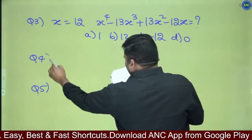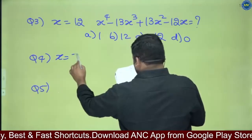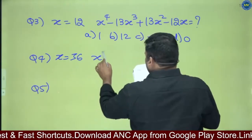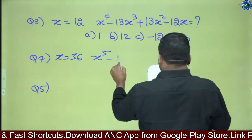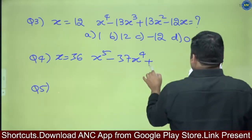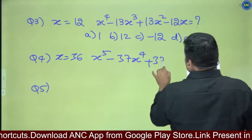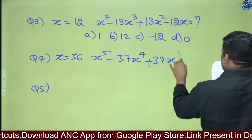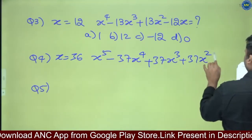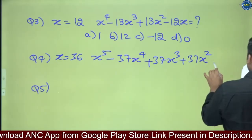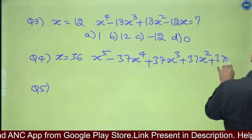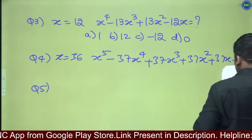Question number 4: x equivalent to 36. The expression is x power 5 minus 37x power 4 plus 37x cube plus 37x square plus 37x plus 14.